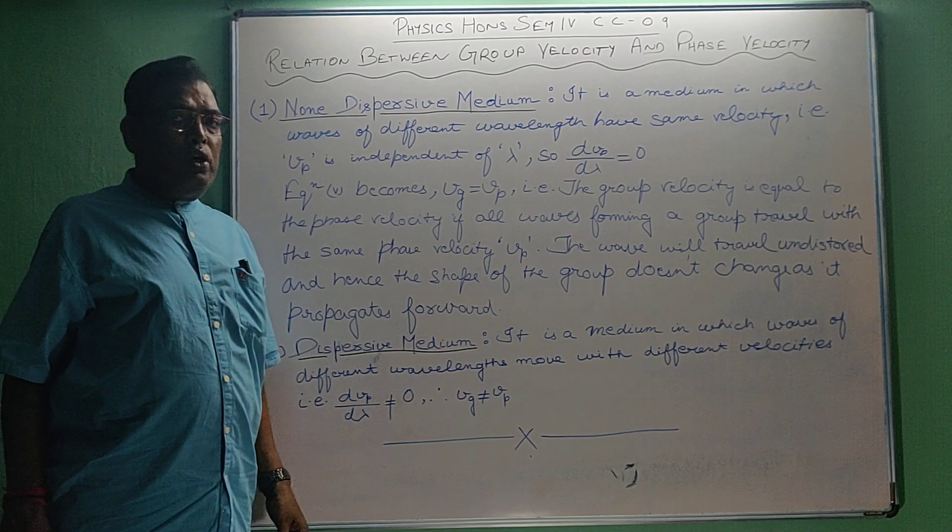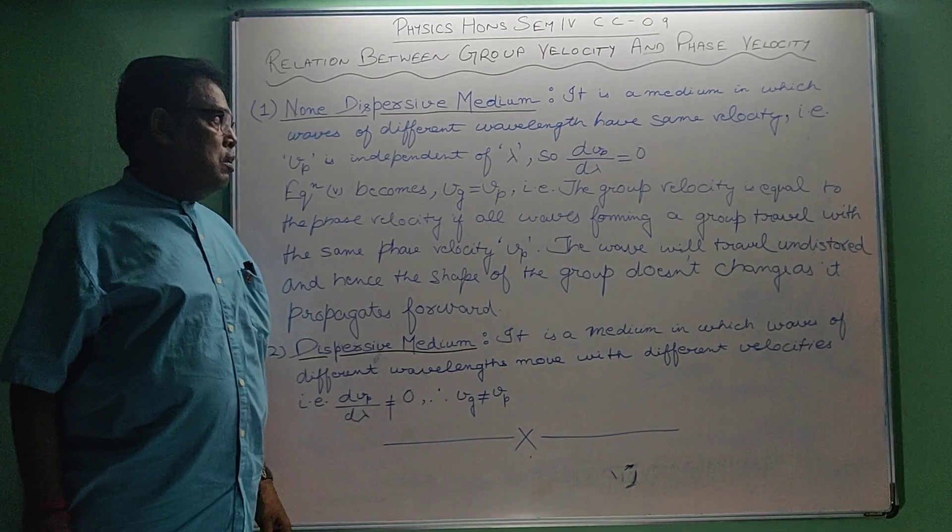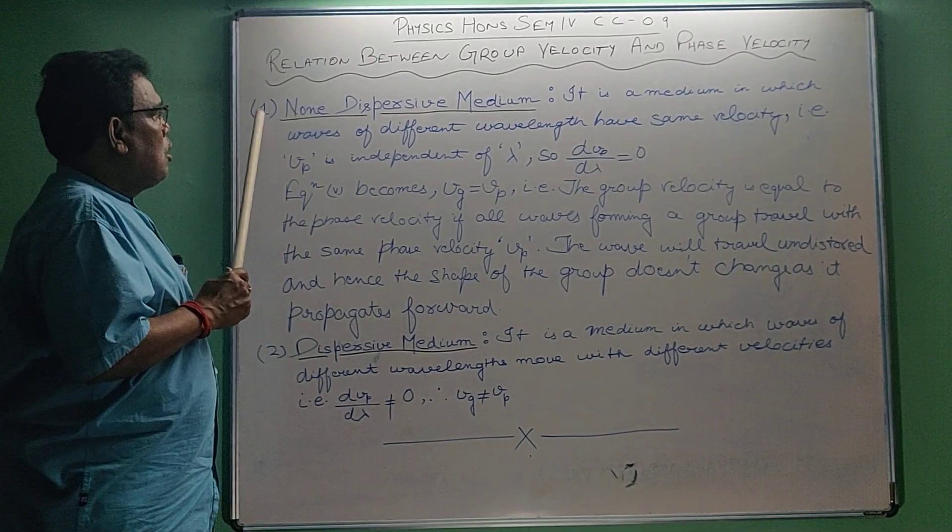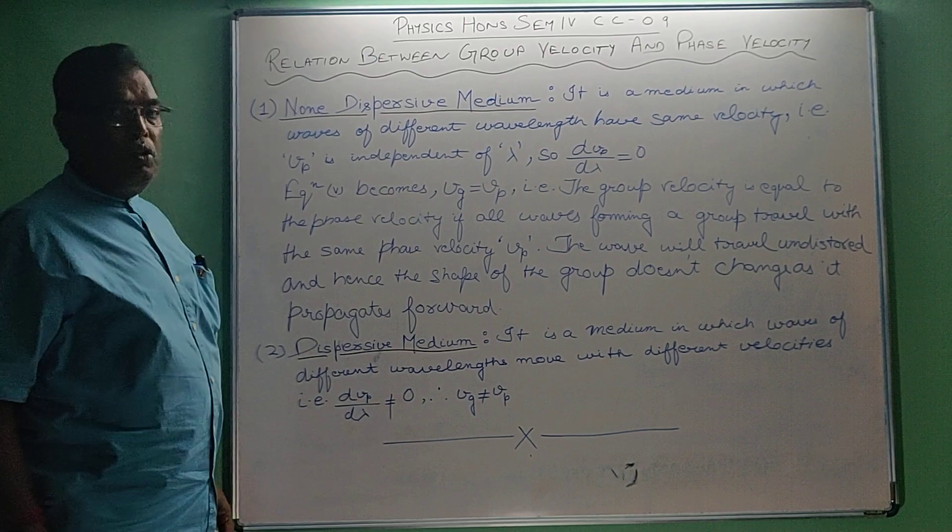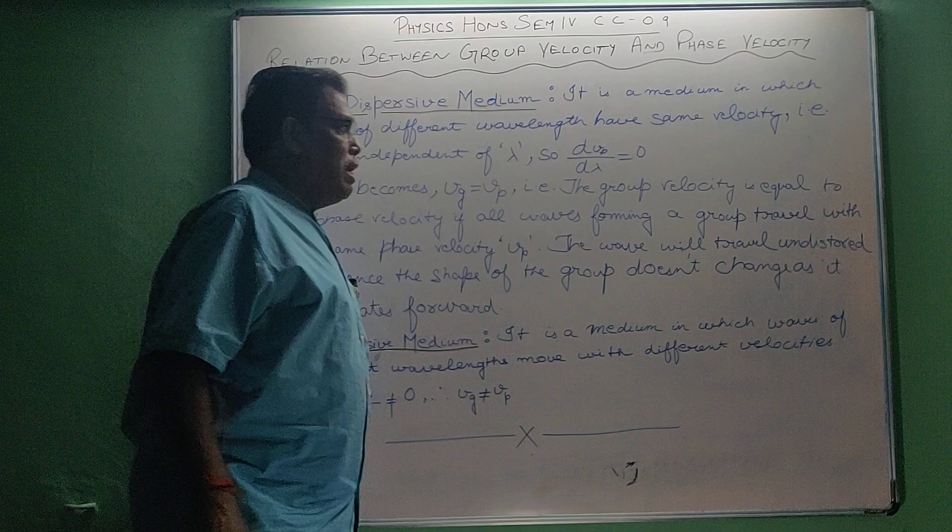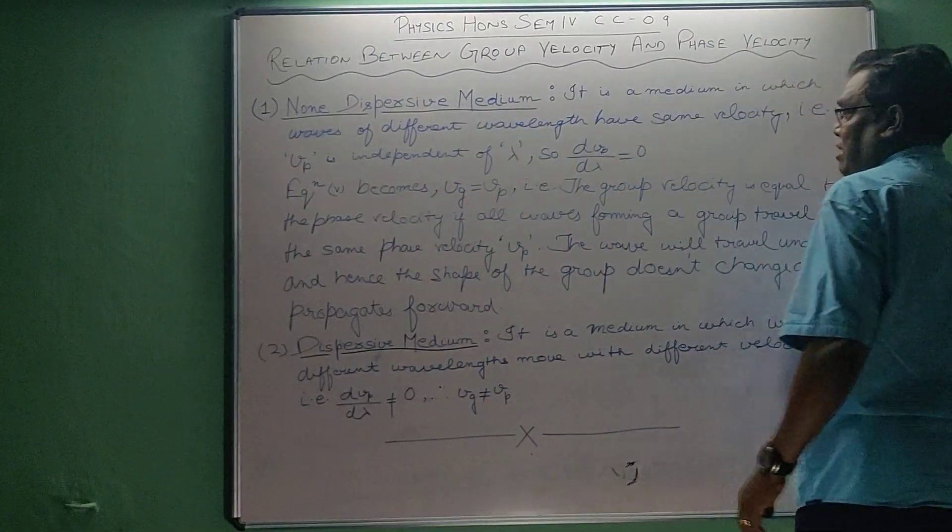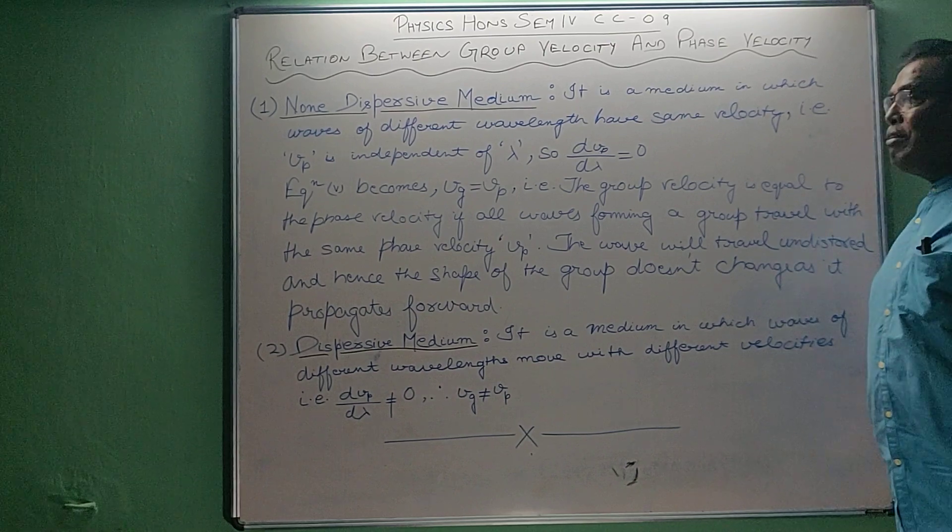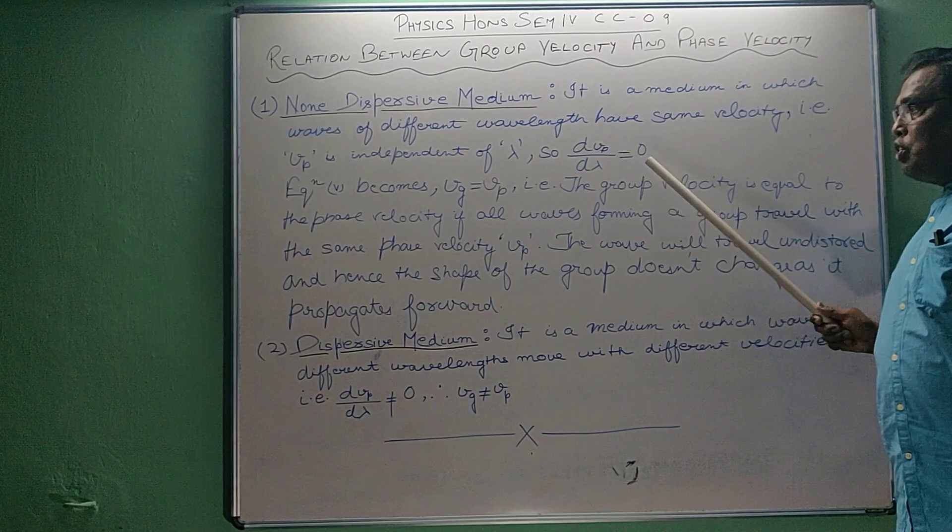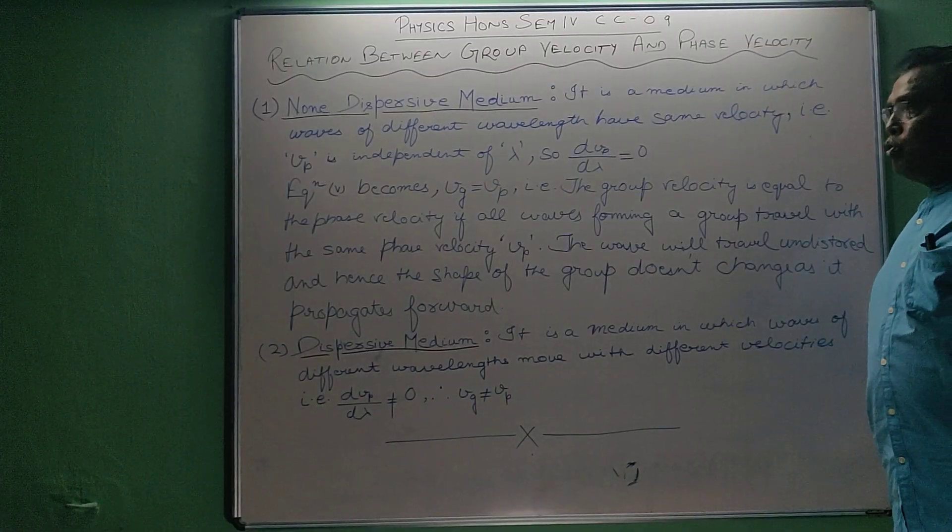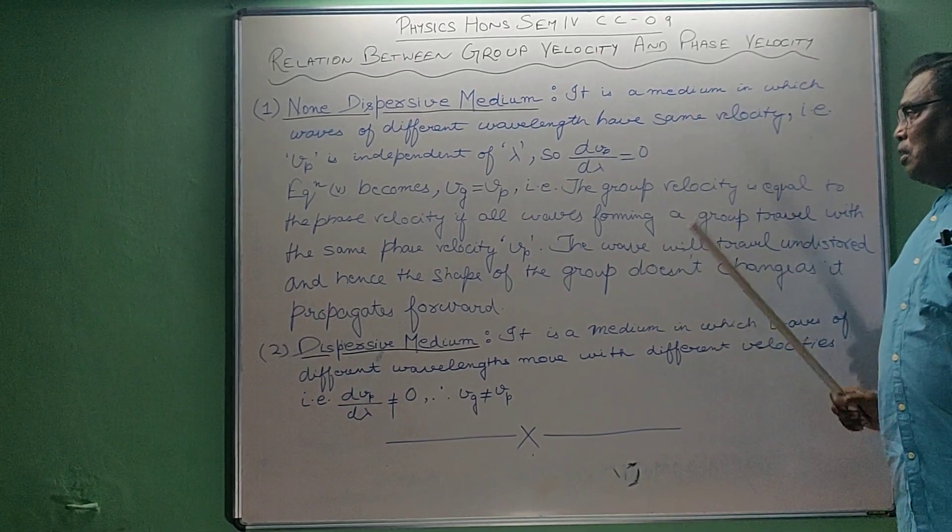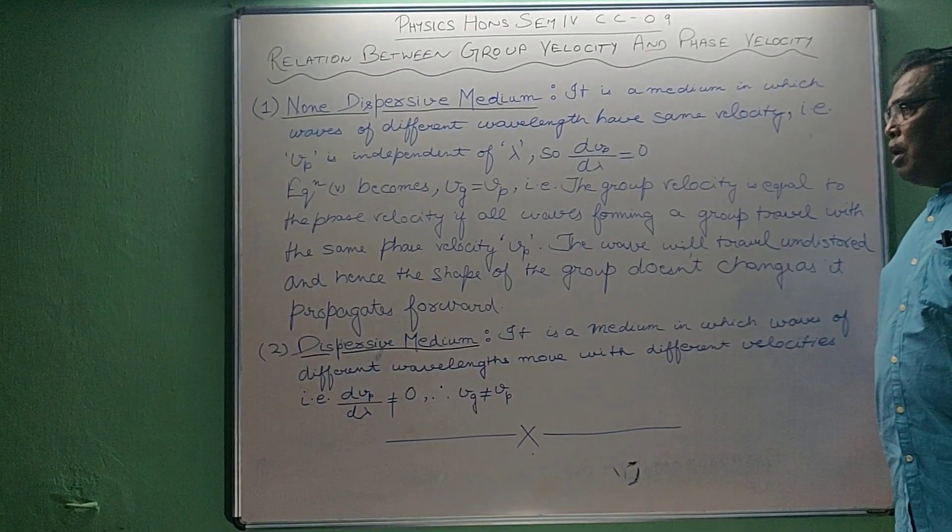Now we have two special cases. Number 1: Non-dispersive medium. It is a medium in which waves of different wavelengths have same velocity. That is vp is independent of lambda. And when vp is independent of lambda, dvp by d lambda is equal to 0. So equation 5 becomes vg equal to vp. And the result is the group velocity equal to the phase velocity.